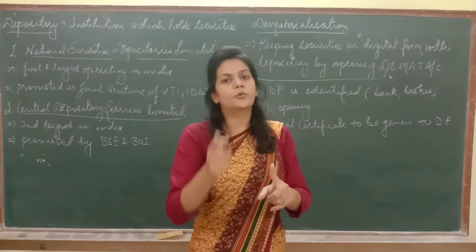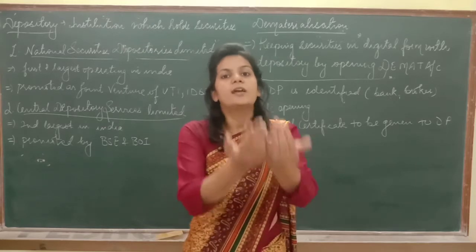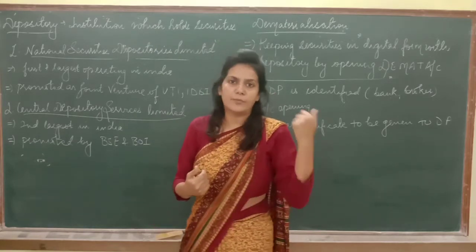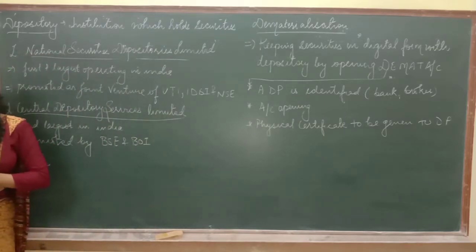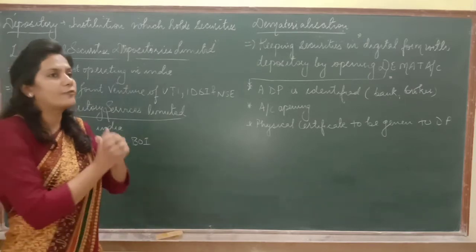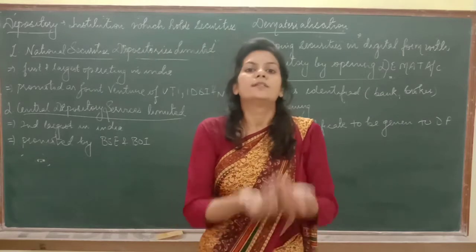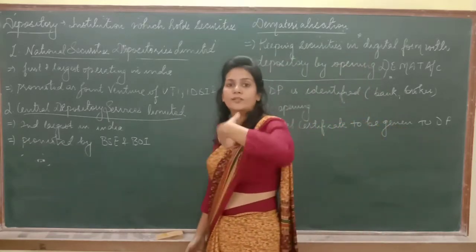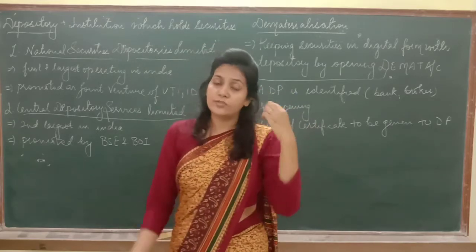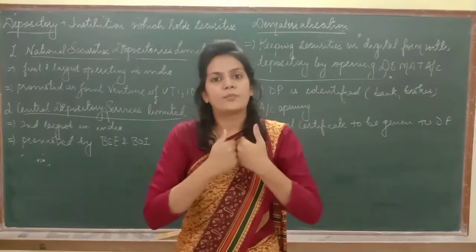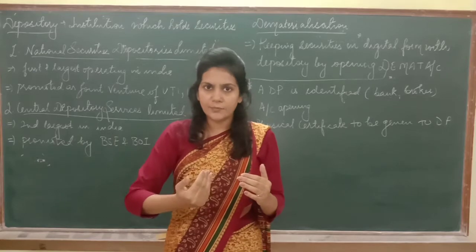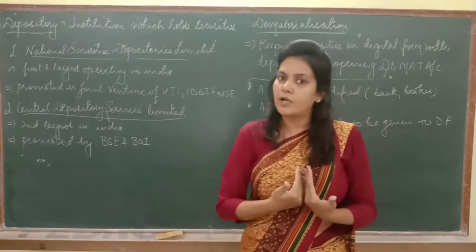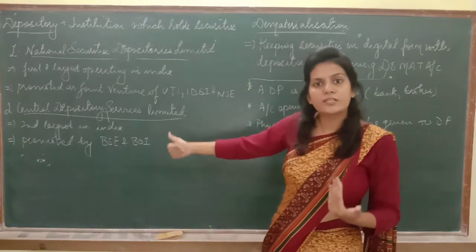When you give instructions to sell your shares, the depository participant will sell them on your behalf and debit your account. Whenever you buy shares your demat account is credited, and whenever you sell shares your demat account is debited. The broker gives instructions to the depository participant for delivery of shares. The depository then takes those shares from your account and processes the sale.